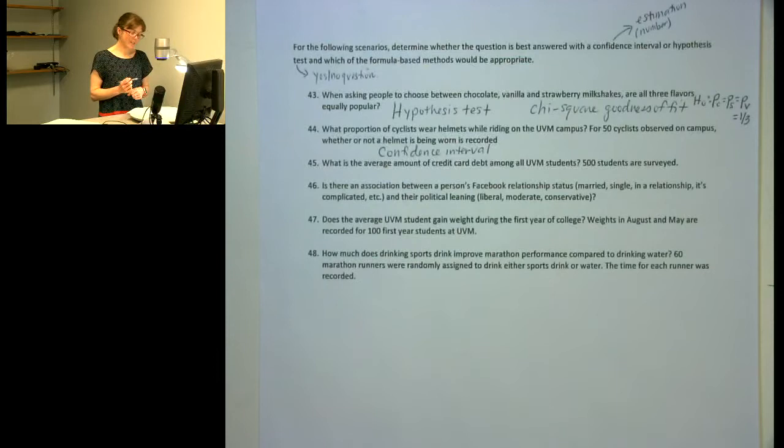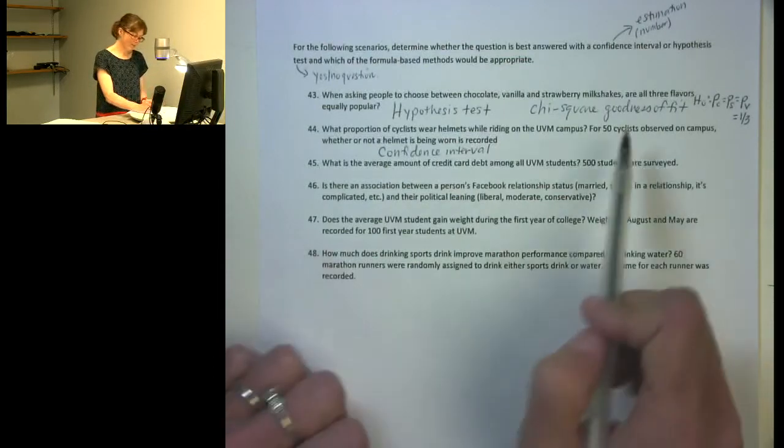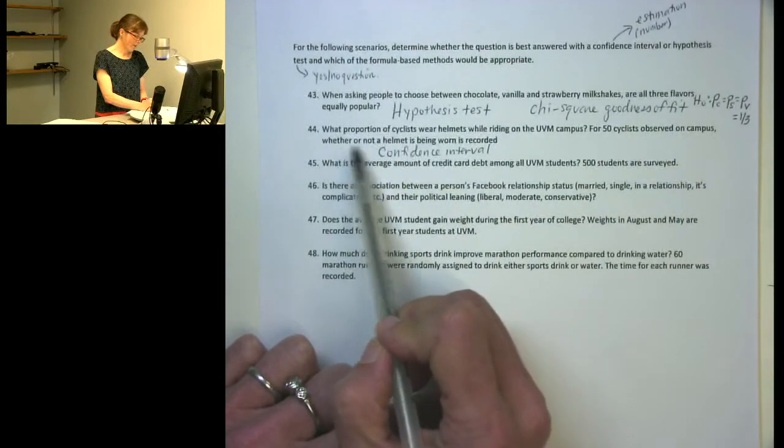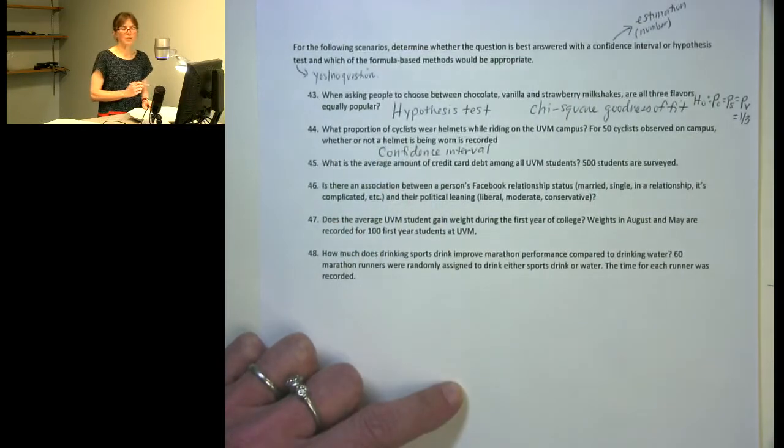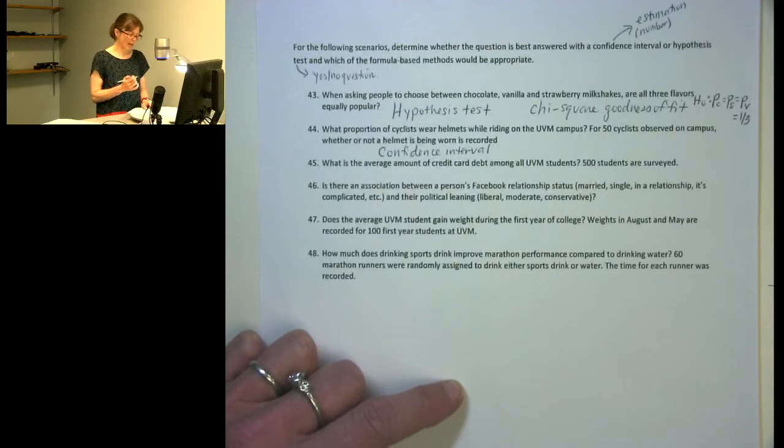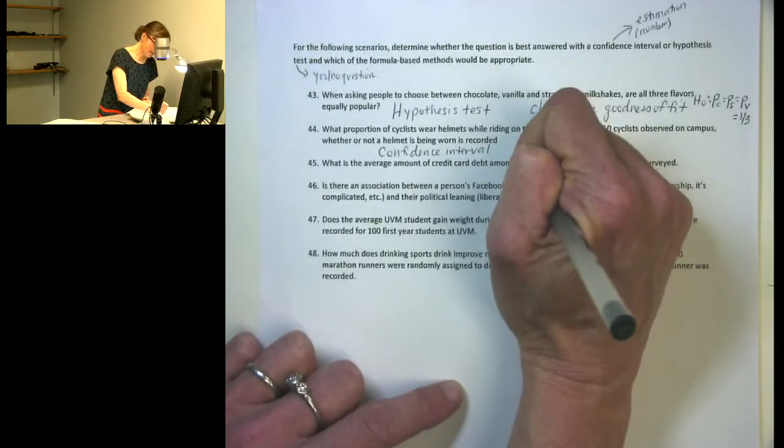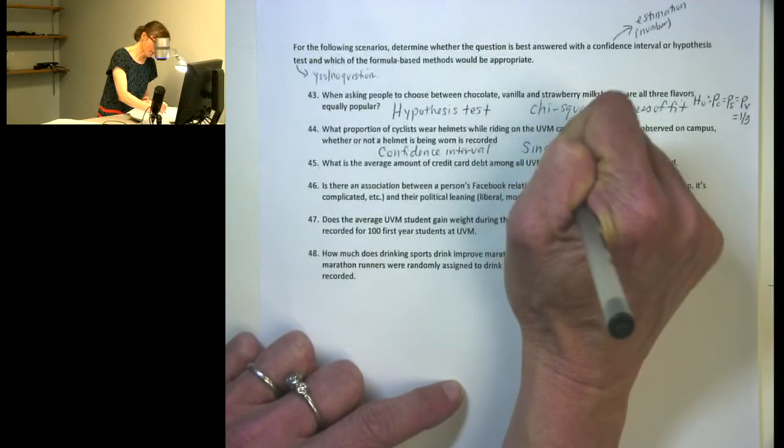What type of confidence interval? Let's think about what kind of variable we have. Fifty cyclists were observed on campus, and whether they wore a helmet or not is what's being recorded. So we've got one categorical variable. There are only two categories. So we'd make a confidence interval for a single proportion.